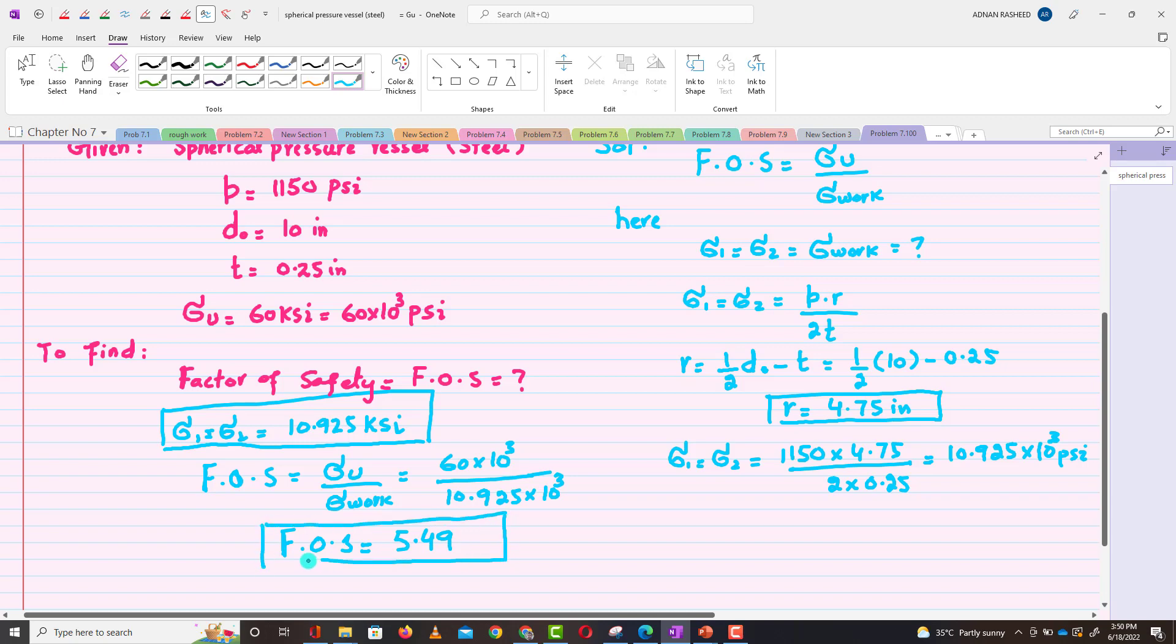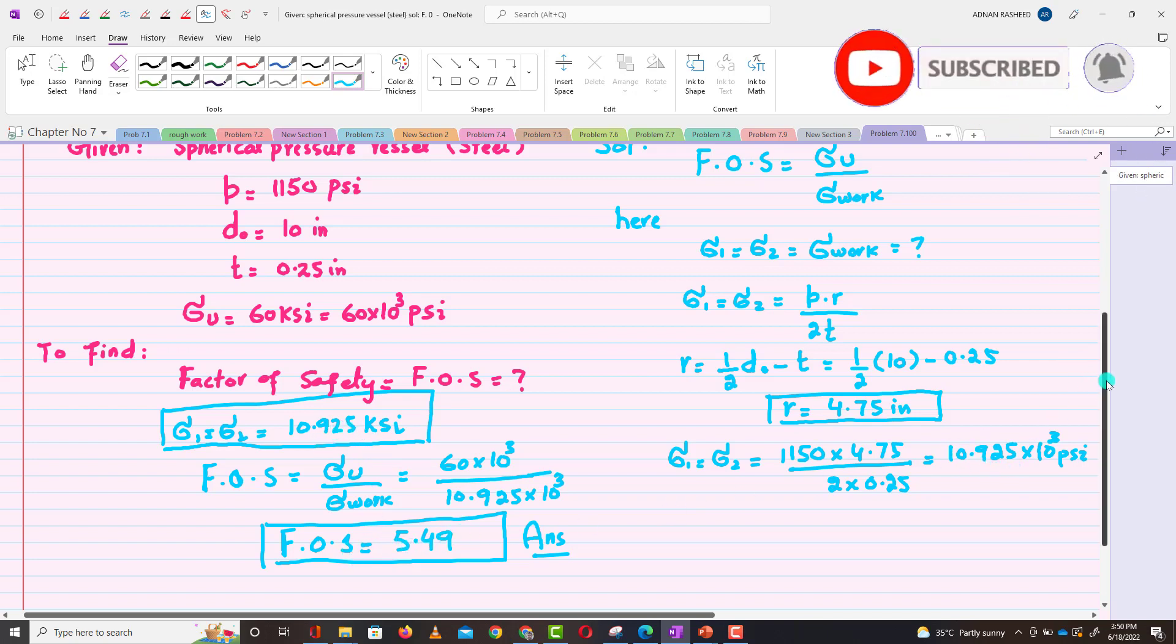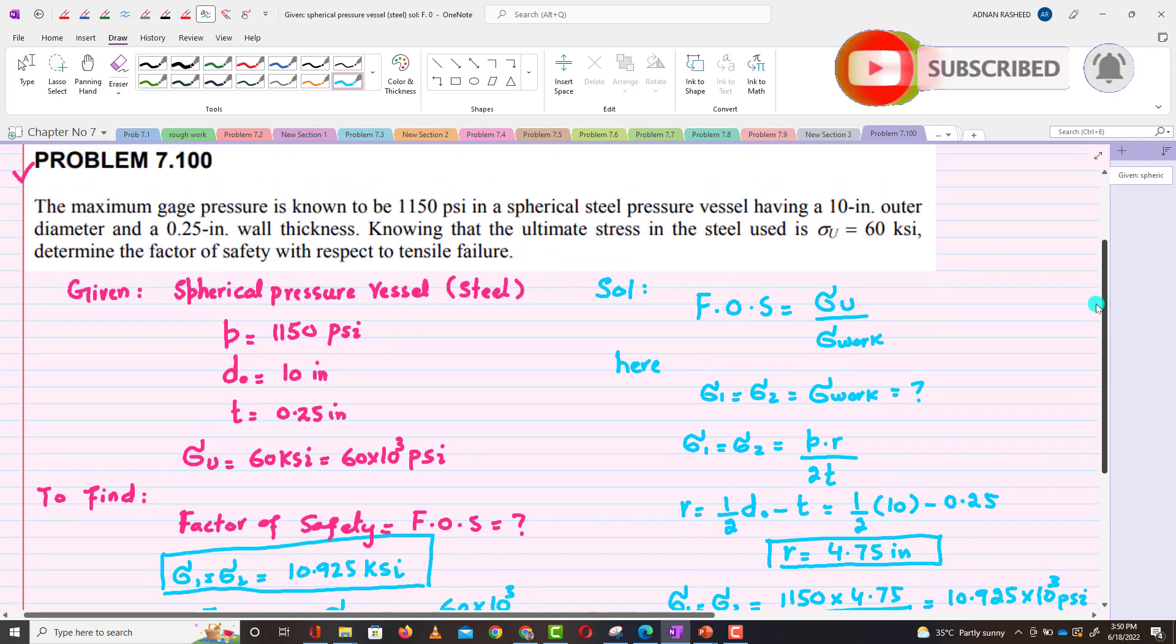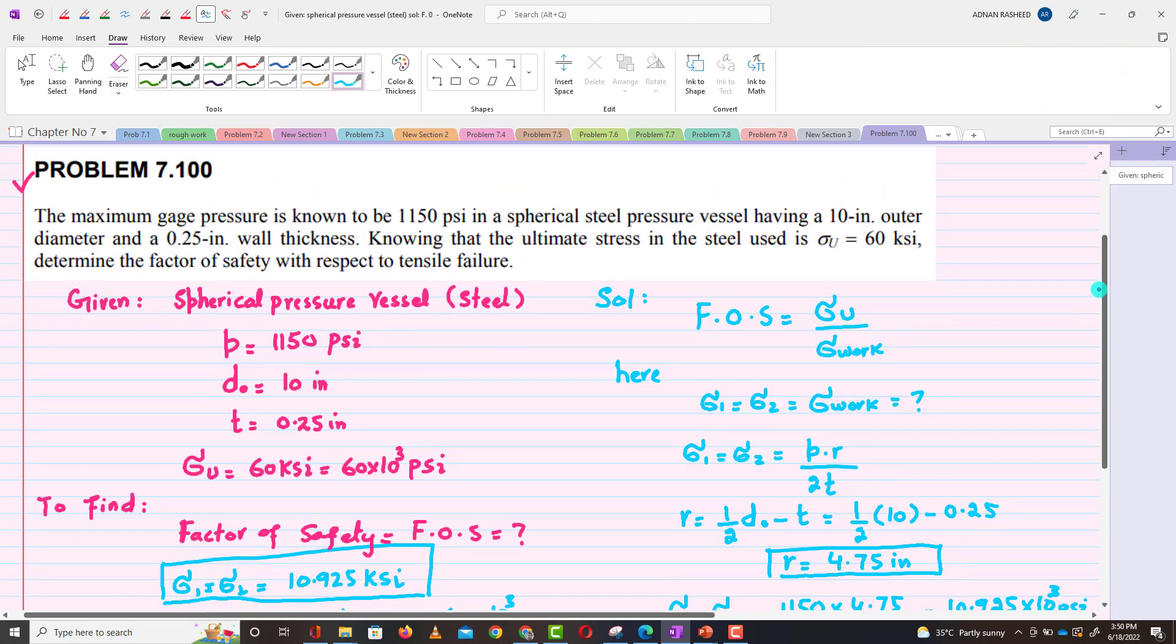So this is the answer. Now what does factor of safety mean? Under the stress of 10.925 ksi, this design is 5.49 times safer. I hope you have enjoyed the video. Thank you for watching.